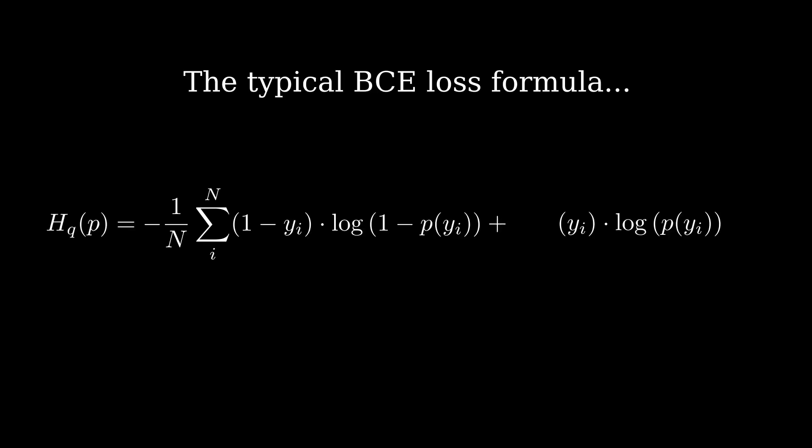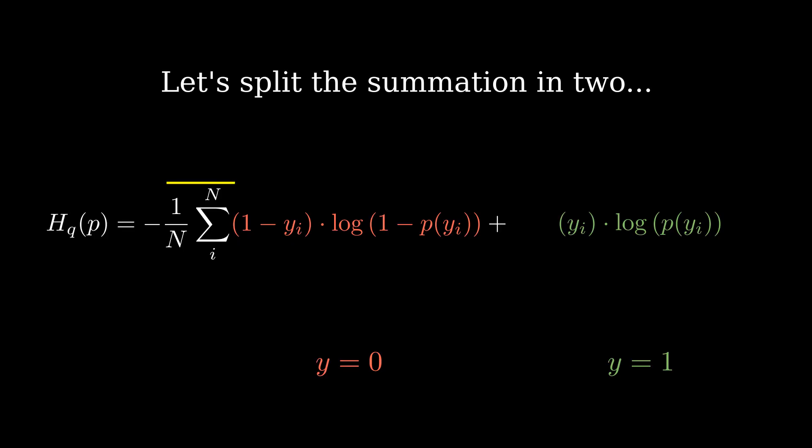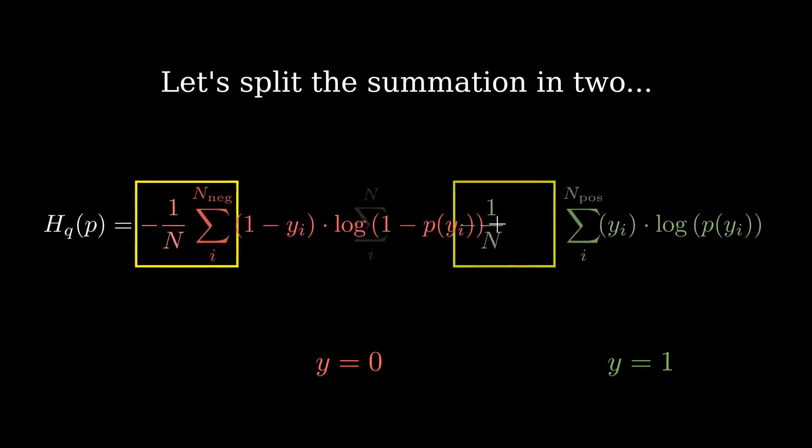This is the typical binary cross entropy loss formula you'll find in books and tutorials. It has two components, one for the negative class and one for the positive class. We can split the summation in two parts, one for each class.